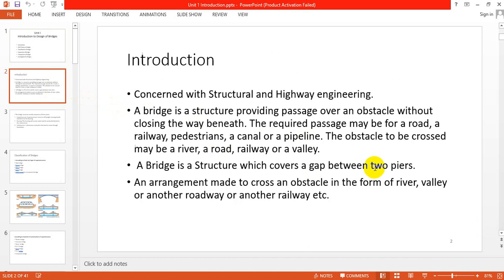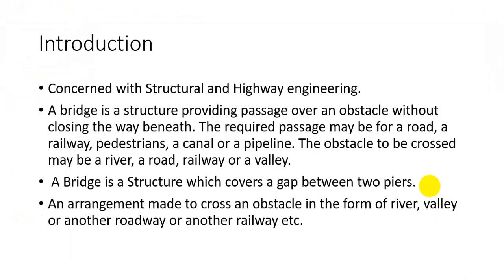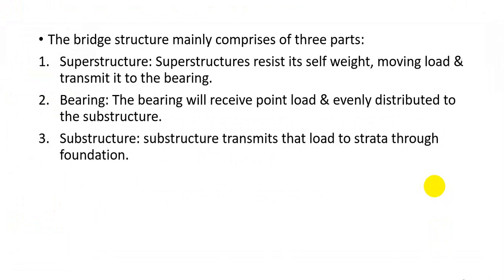So what is a bridge? A bridge is a structure which provides passage over an obstacle without closing the way beneath. That obstacle may be a river, a road, a railway, or a valley. The passage required may be for road, railway, pedestrians, canal, or pipeline. This bridge structure is generally concerned with structural highway engineering. It covers a gap between two piers or is an arrangement made to cross an obstacle in the form of a river, valley, or another roadway or railway.